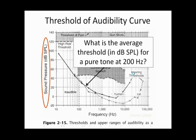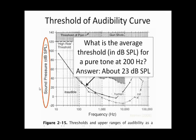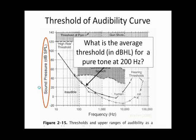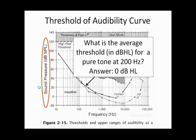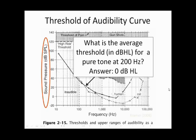What is the average threshold in dB SPL for a pure tone at 200 hertz? Looking at the average pure tone threshold line, the answer is about 23 dB SPL. And the average threshold in dB HL for a pure tone at 200 hertz is still 0 dB HL — it's always 0 dB HL. Similarly, for 2,000 hertz, the average threshold is 0 dB SPL, and the average threshold in dB HL is 0 dB HL. This line was obtained by testing several humans to determine their hearing in dB SPL, and the mean was derived.